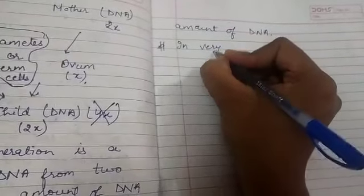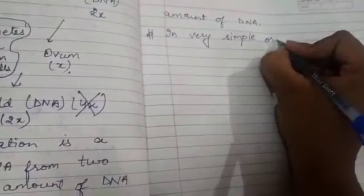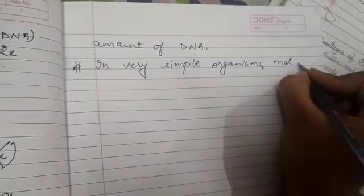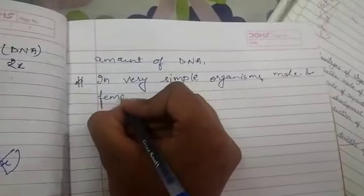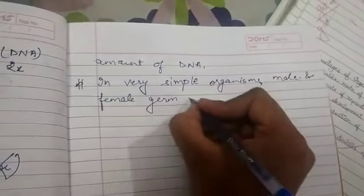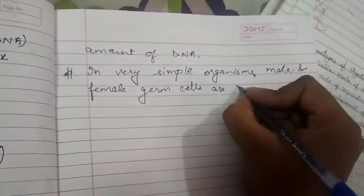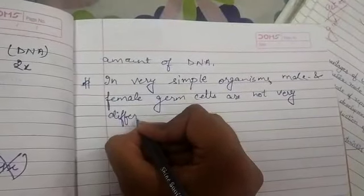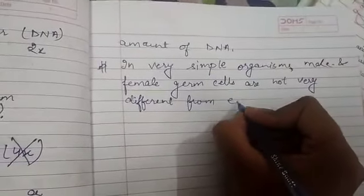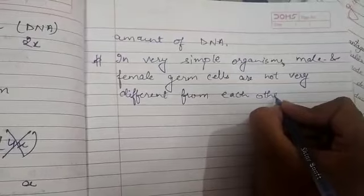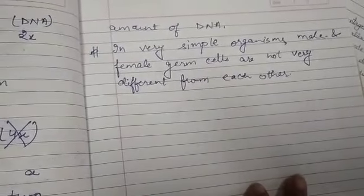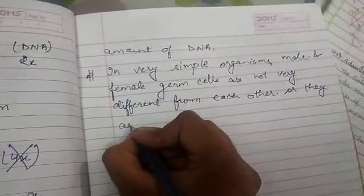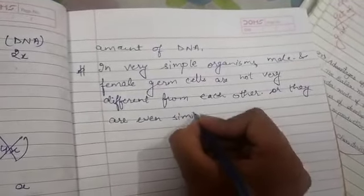In very simple organisms, the male and female germ cells are not very different from each other — they are similar, even identical to each other.